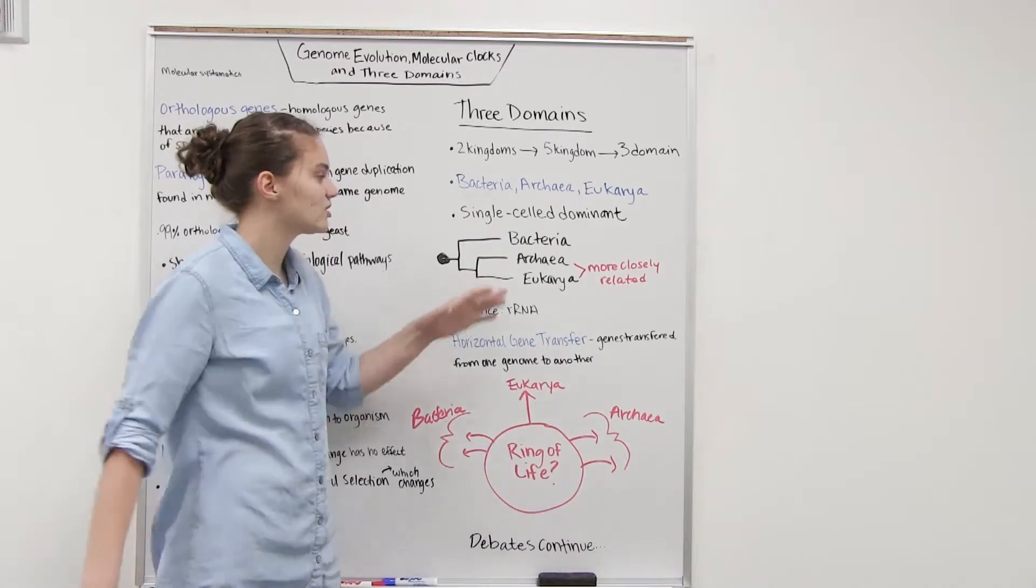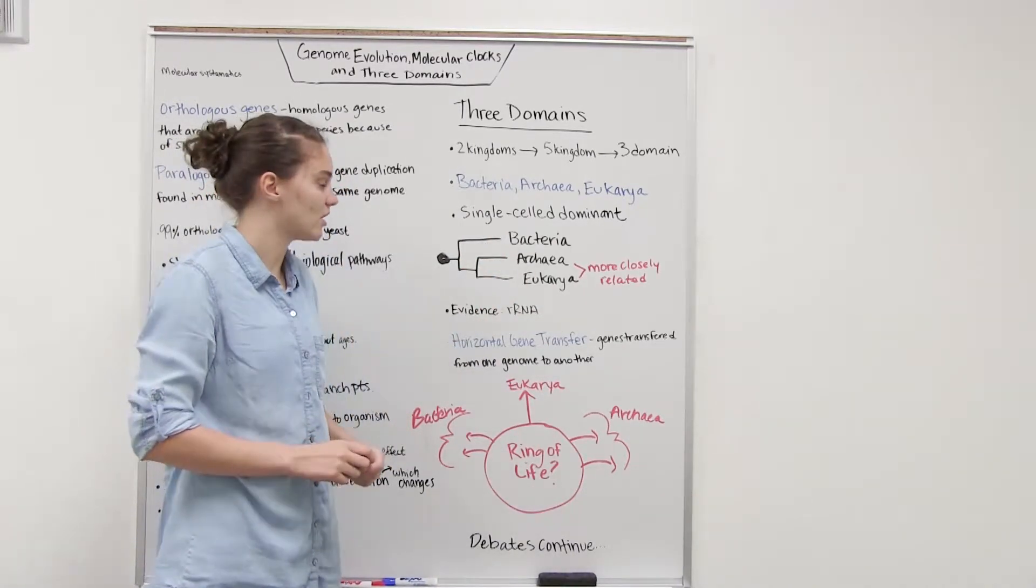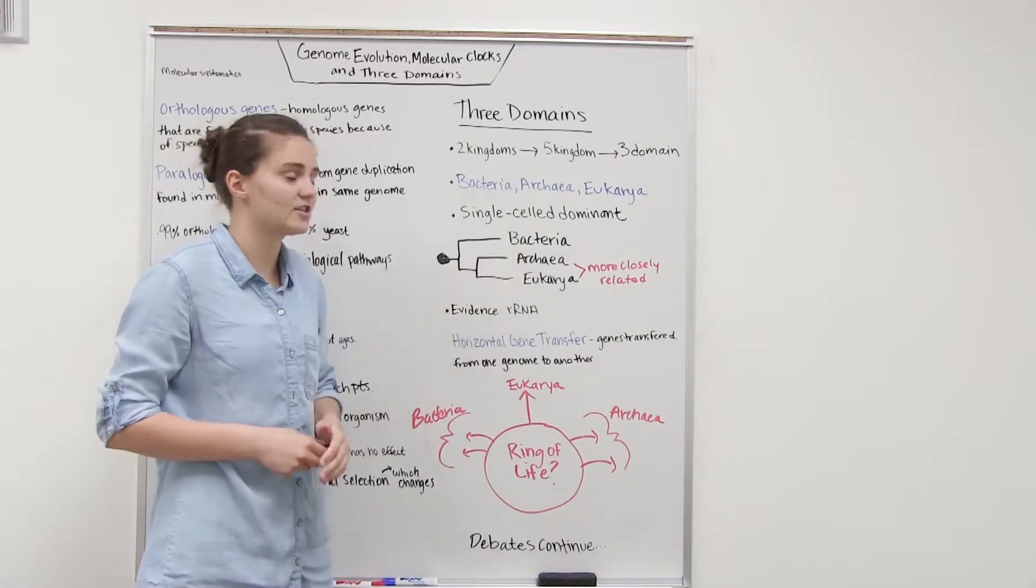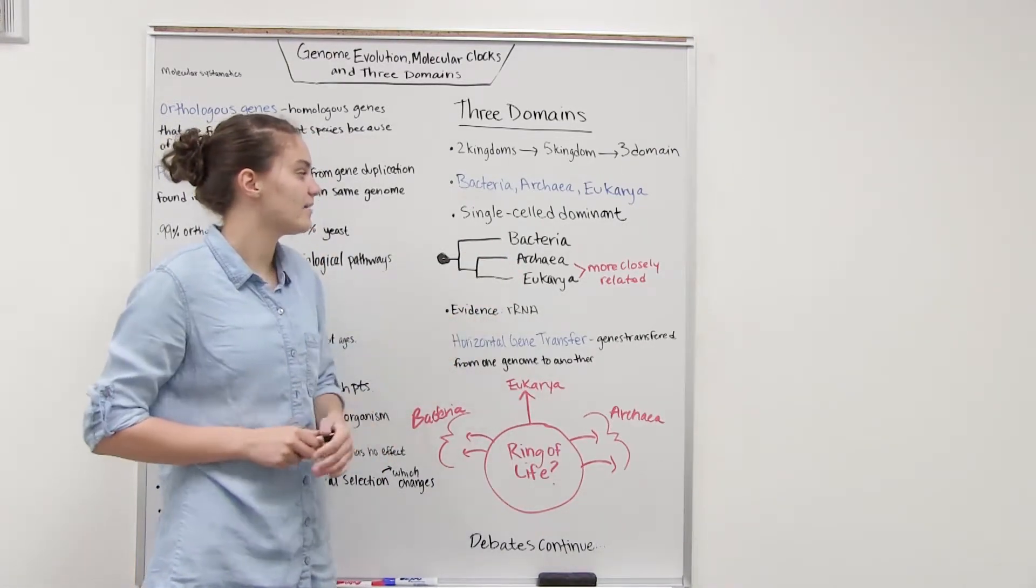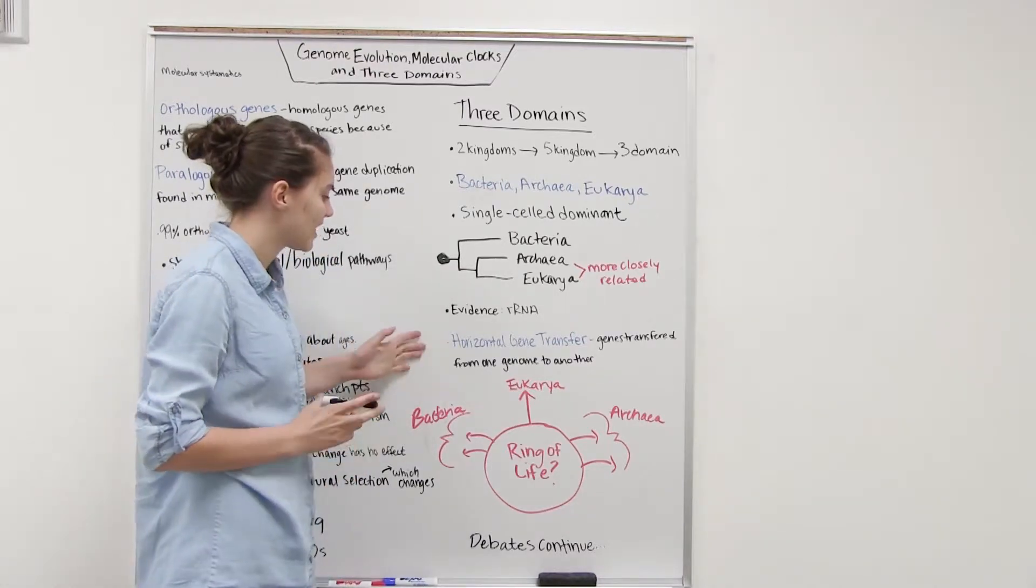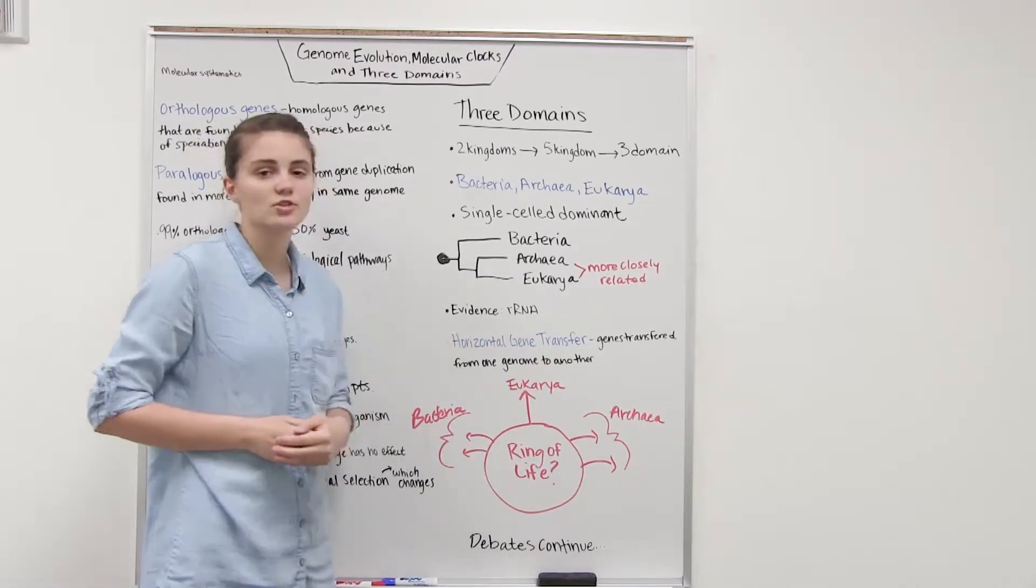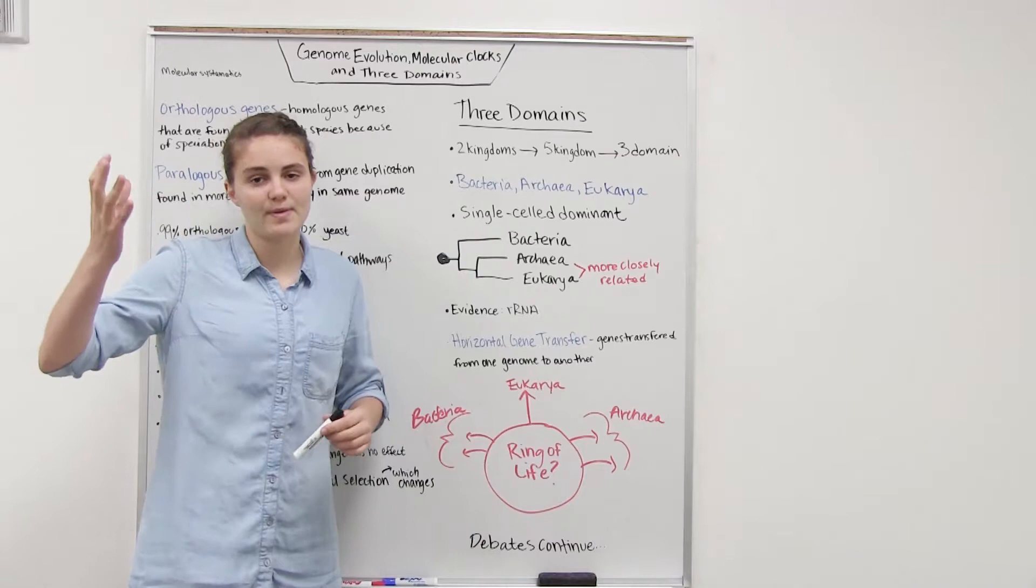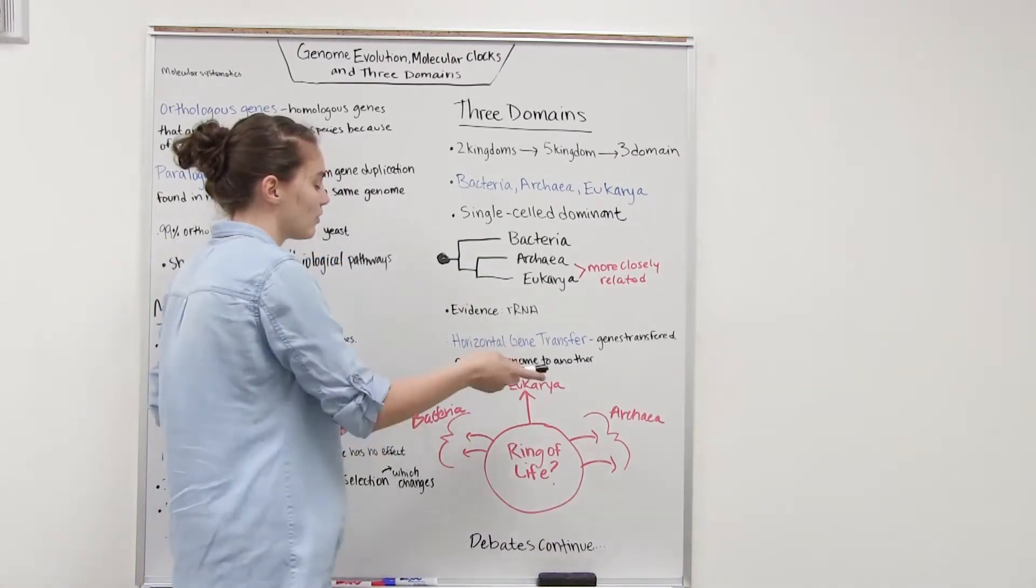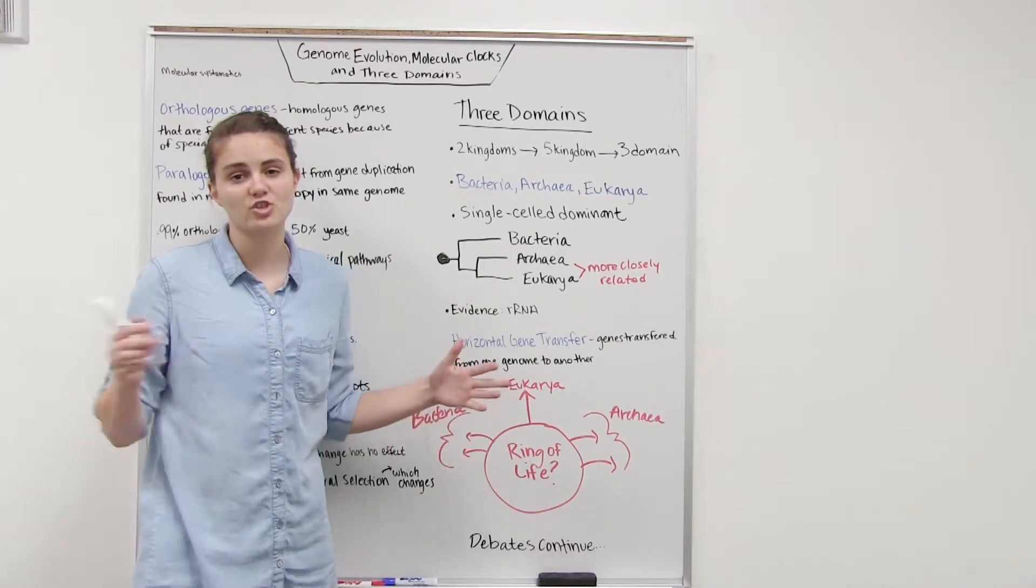However there's still some questioning about whether this is the evolutionary relationship because there are some similarities between eukarya and bacteria. They think maybe bacteria and eukarya are more similar. Some of it's explained with horizontal gene transfer. We've already been learning about vertical gene transfer in which genes are passed from parent to offspring. The idea of horizontal gene transfer is that genes are transferred from one genome to another.